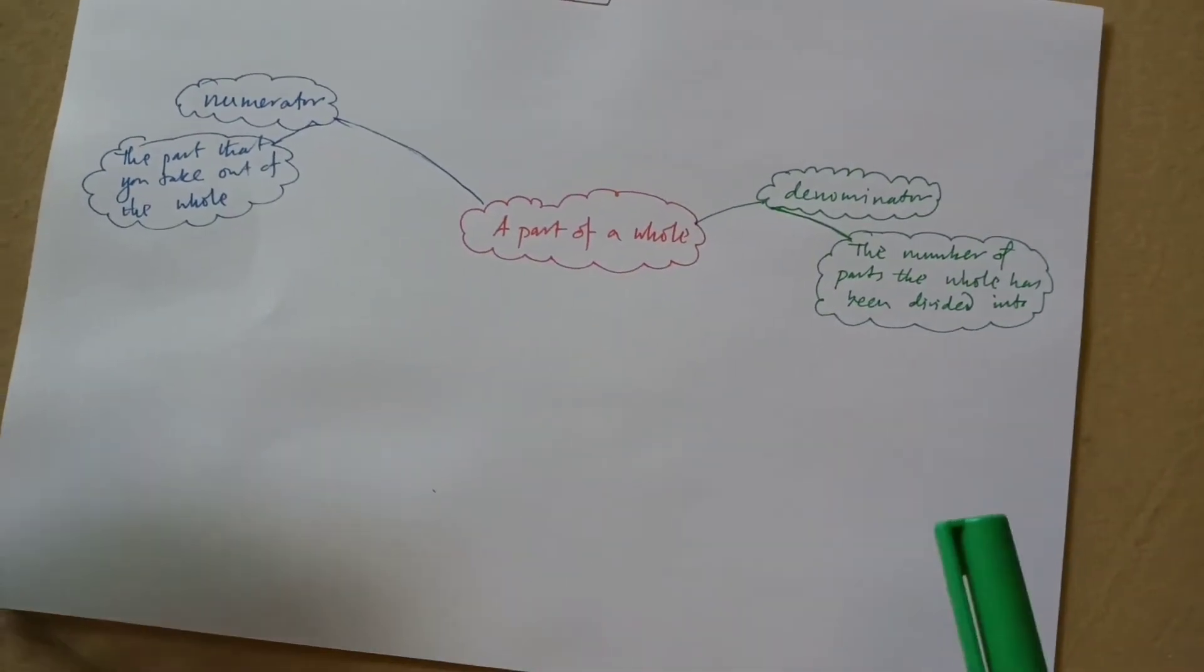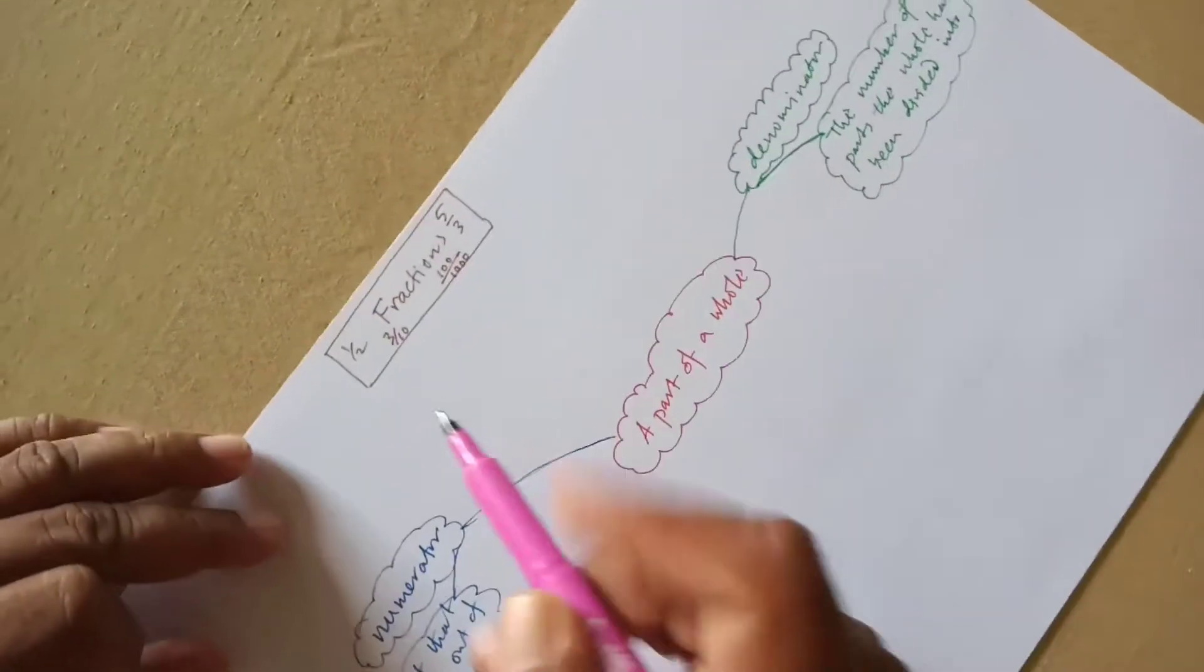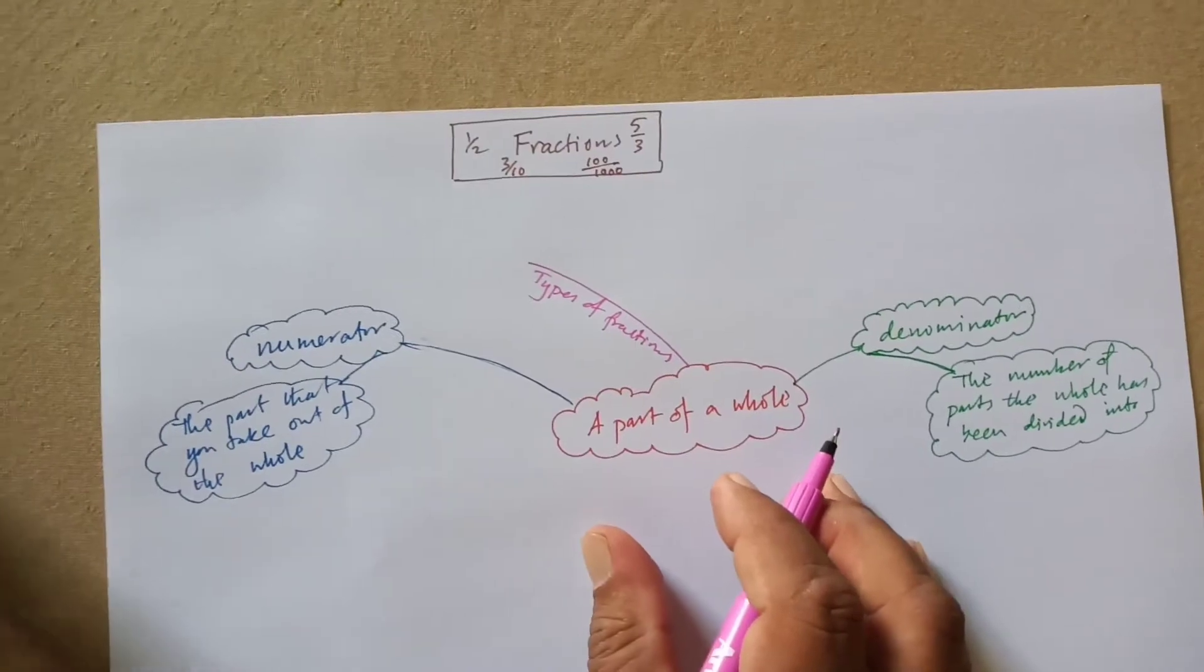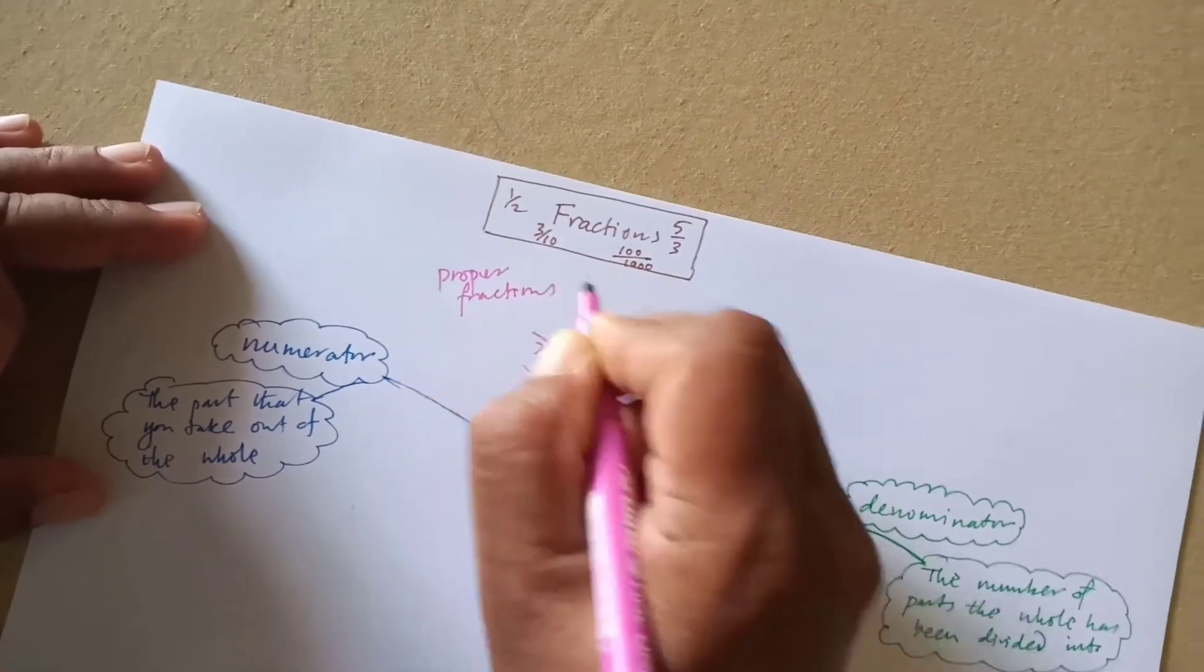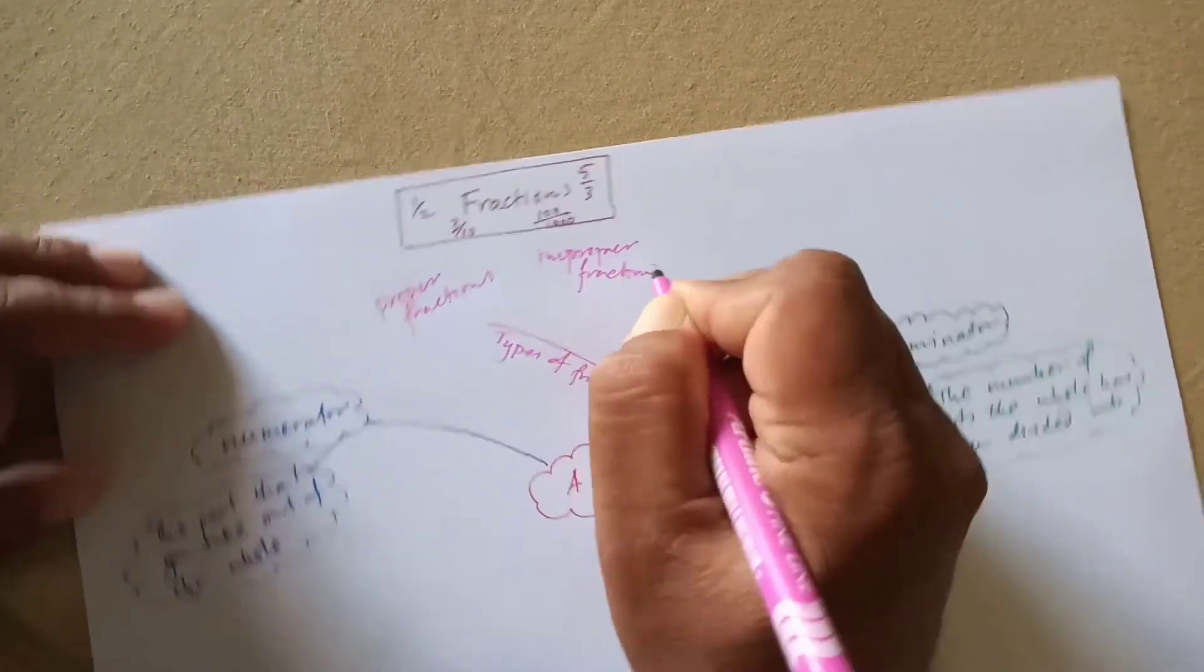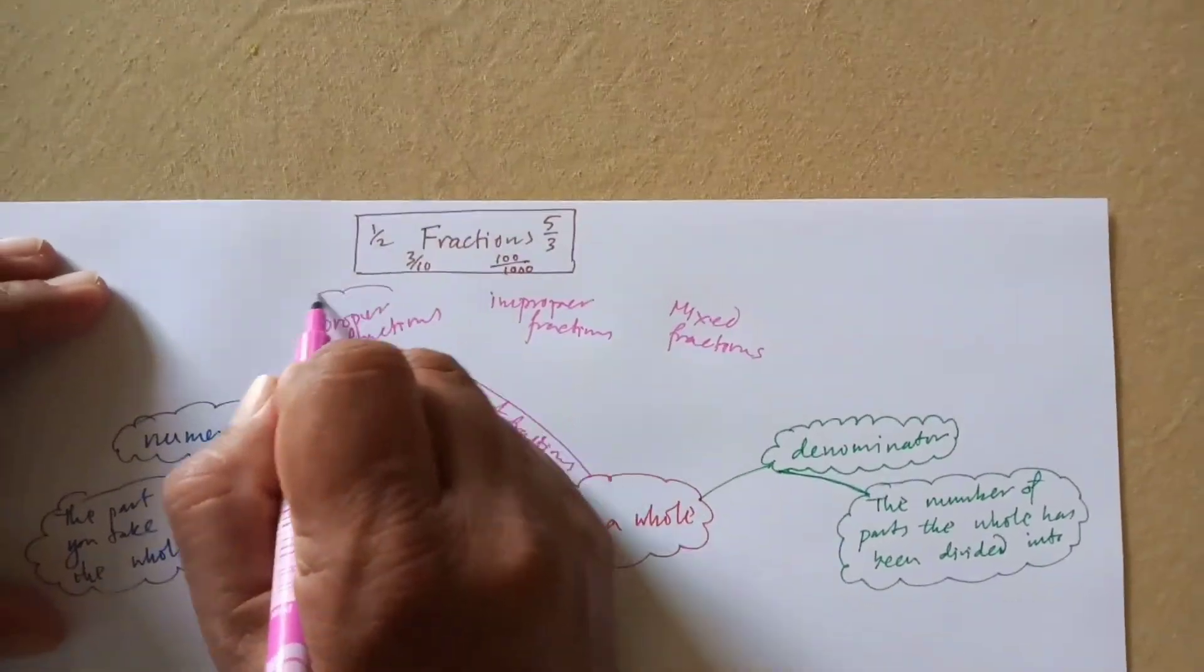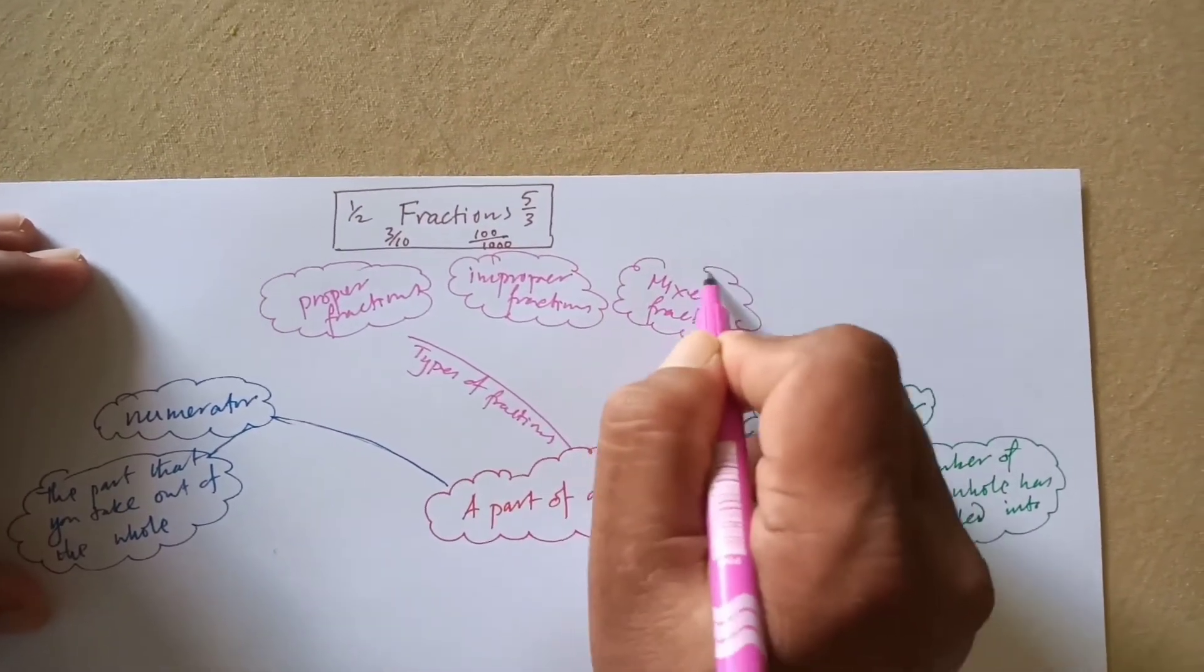Now, there are different types of fractions. Let us use a different pen for that. Let's write it over here. Types of fractions. Let us see what are the types of fractions. They are proper fractions, there are improper fractions, and there are mixed fractions or they are also called as mixed numbers. So these are the types of fractions.